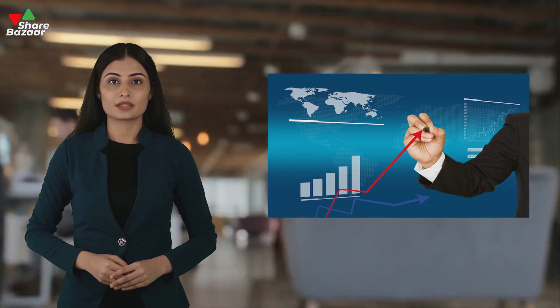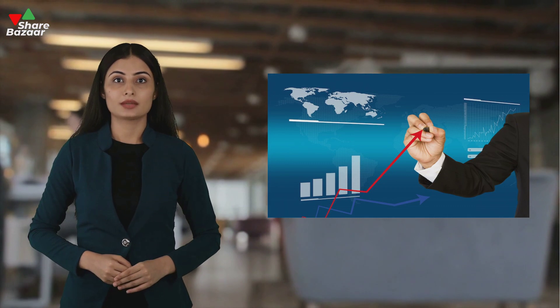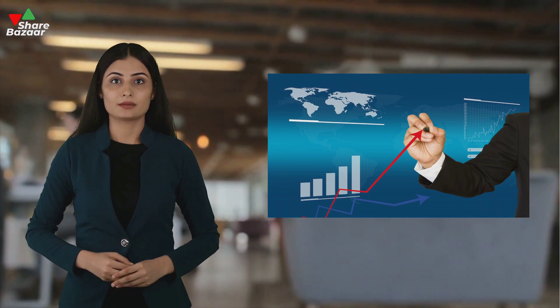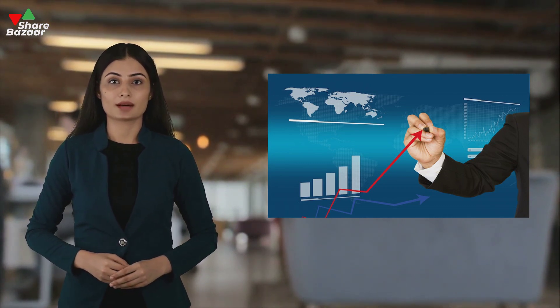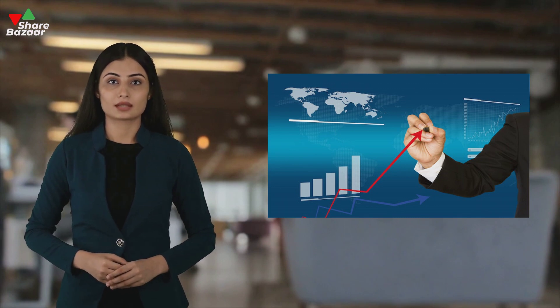When the price crosses the 50-day MA and moves upwards, it generally signifies a bullish trend. When the opposite happens — i.e. the price descends below the moving average — it's an indication of a bearish trend.